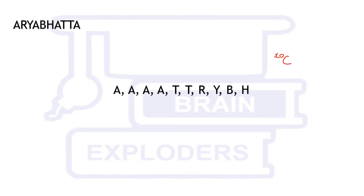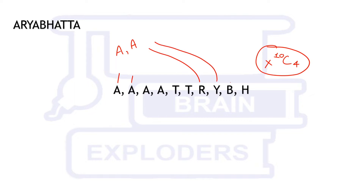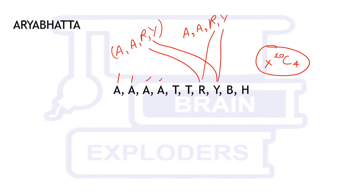So why can't we simply do 10C4? If we do 10C4, it is incorrect. Suppose we selected four letters and we have two A's, one R, and one Y — that is one combination. On the other hand, we can have two different A's along with R and Y — that is another combination. We can clearly see that both of these are the same, but in 10C4 both are counted as different. That's why we cannot apply 10C4 directly.